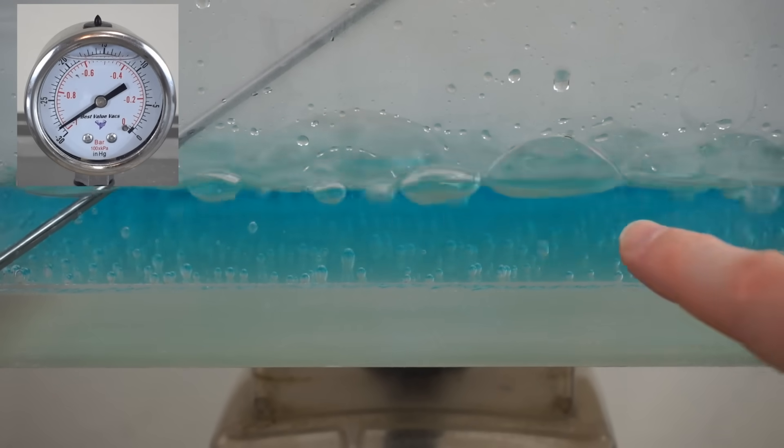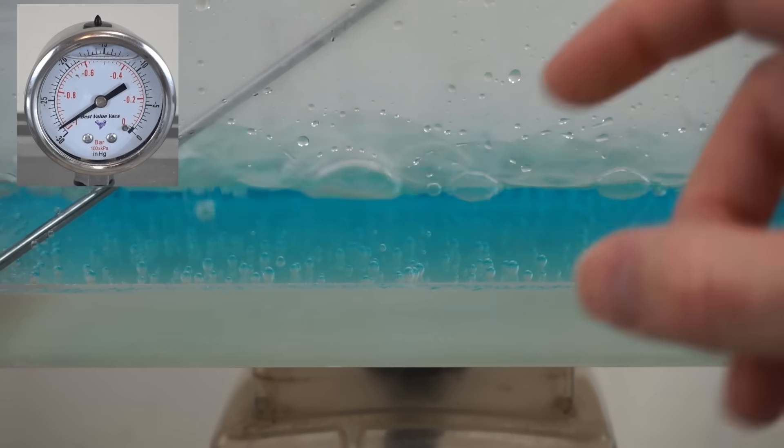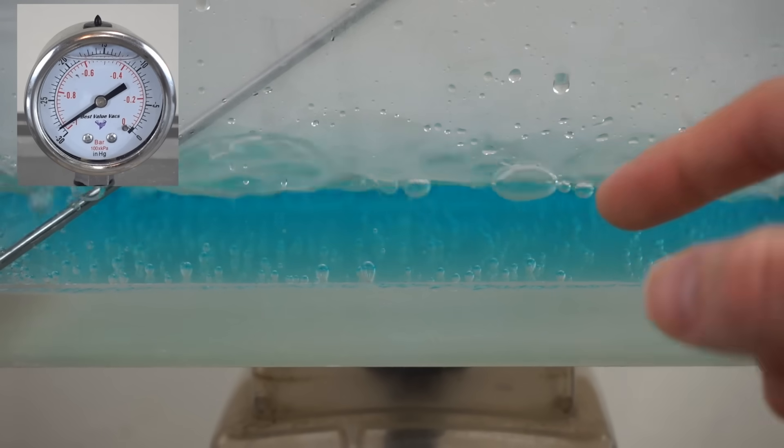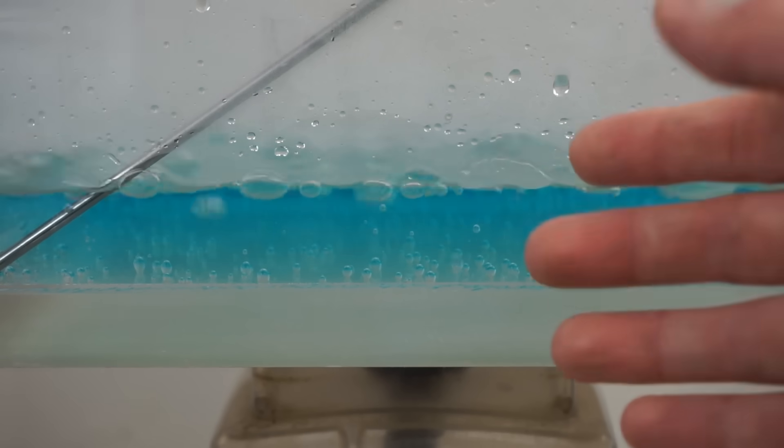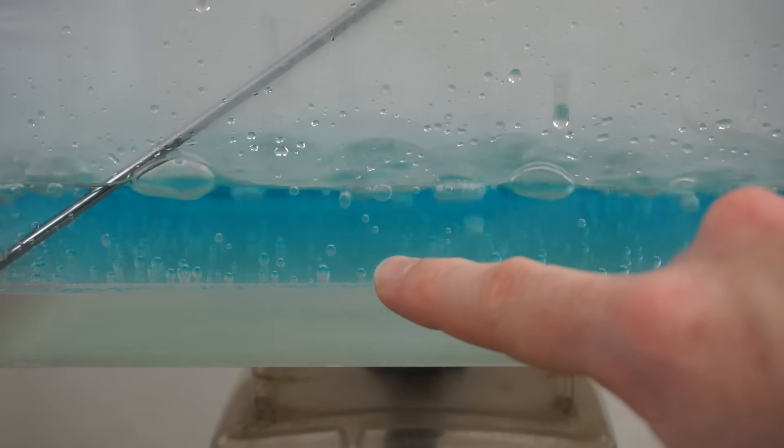And the way that you can tell that this is actually liquid water turning into vapor, meaning it's boiling, is that it continually boils. If this were just dissolved air in the liquid, then it would dissolve out all of the air that was in the liquid, and then it would stop. But you can see that this will just continually boil.